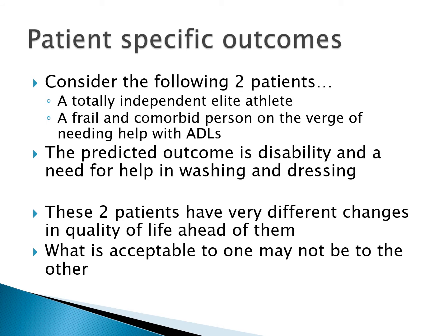Consider the following two patients: a totally independent elite athlete, and a frail, comorbid person who is on the verge of needing help with basic activities of daily living. The predicted outcome following a certain neurological insult is disability and the need for help with washing and dressing. These two people have very different changes in quality of life ahead of them. The frail and comorbid person was heading for this anyway and may see it as fairly minor and totally acceptable, but for a totally independent elite athlete that is a huge change and may not be acceptable to them.